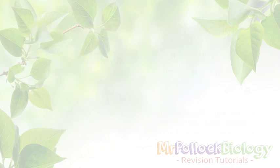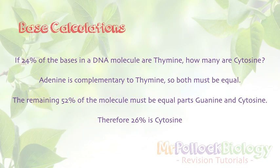An interesting spin the examiner can give on this is a base calculation. They can tell you that 24% — or any other percentage — of the bases in DNA are thymine, and ask you to work out the other bases. The logic is: adenine is complementary to thymine, so they must be equal. So 24% and 24% gives 48% of the DNA accounted for, meaning the remaining 52% must be equal parts guanine and cytosine. Dividing by two, we can deduce that if 24% are thymine, then 26% must be cytosine.